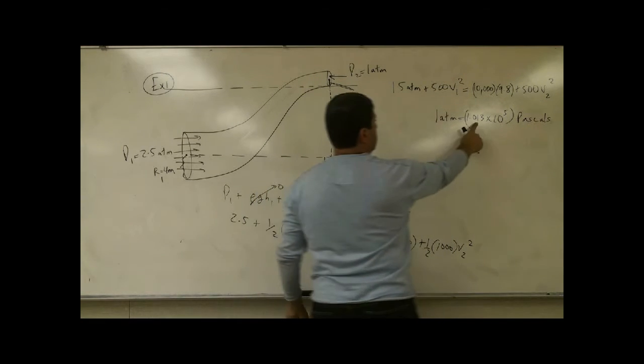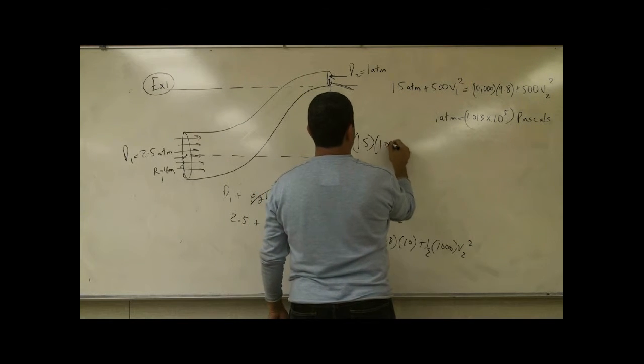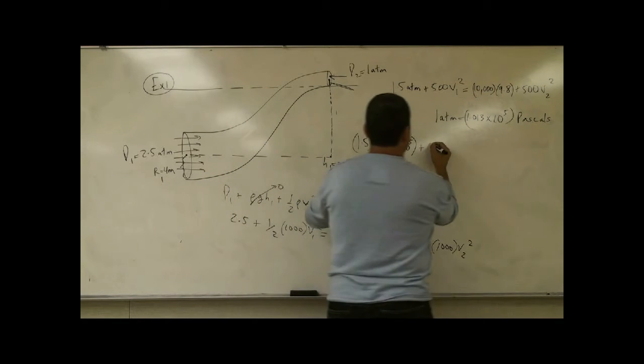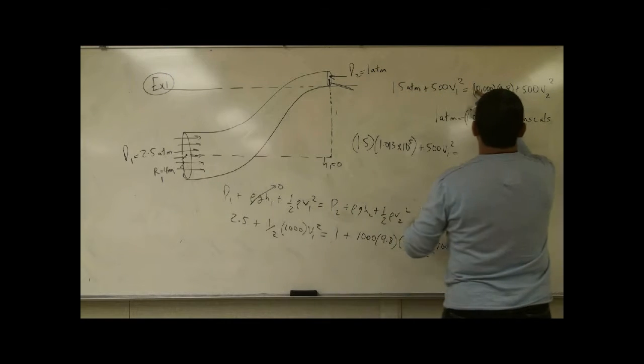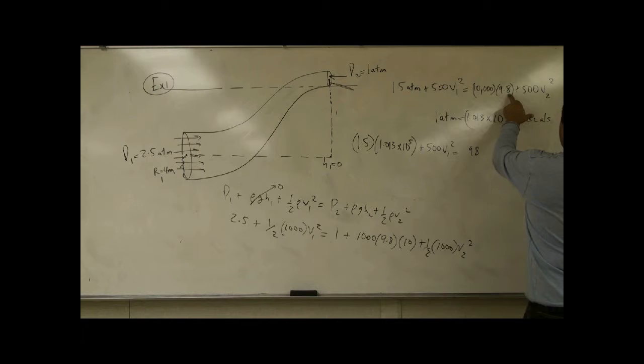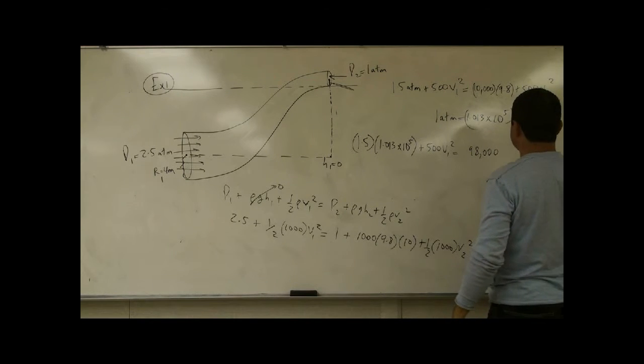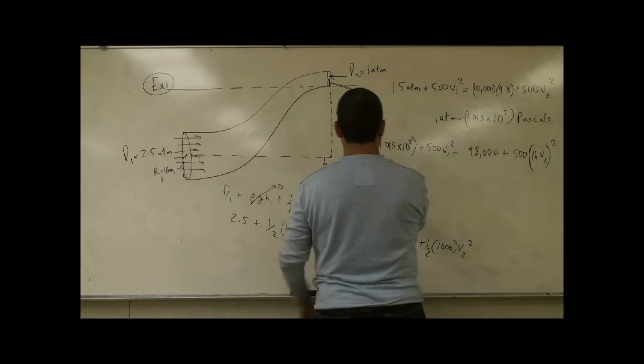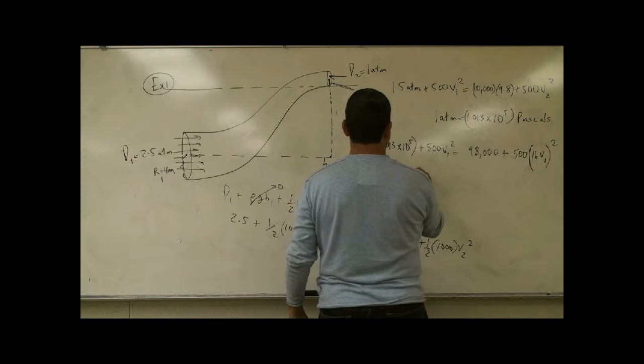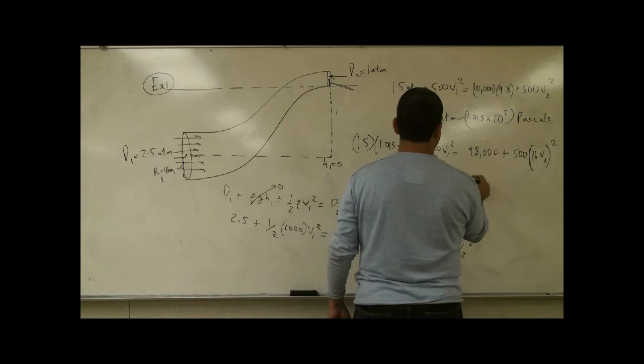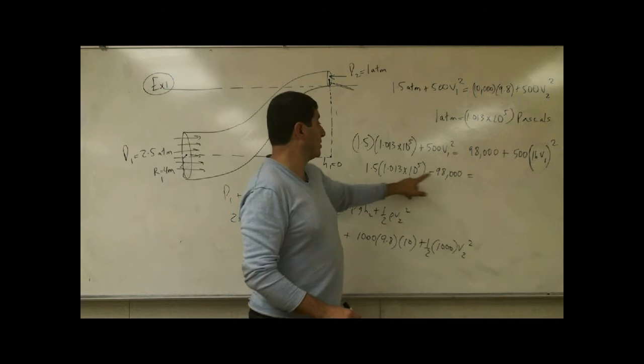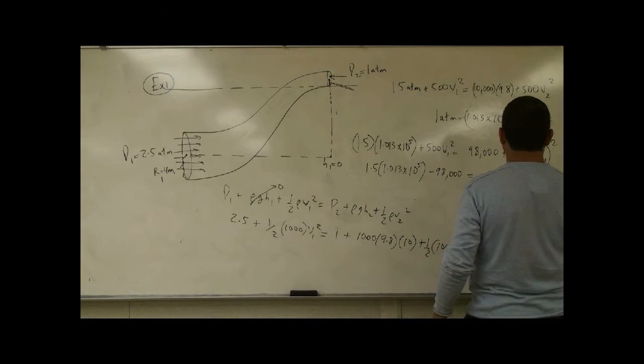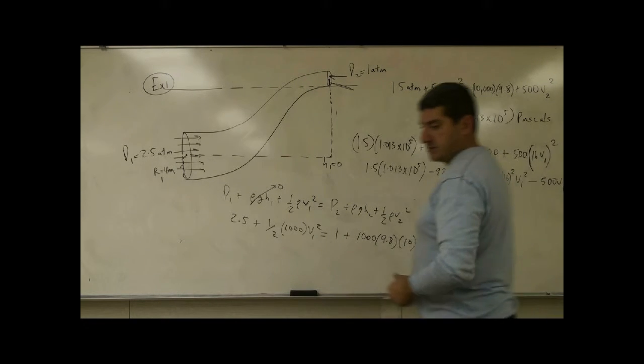So we have here 1 and a half atmospheres and then I have to multiply that by this number, 1.013 times 10 to the fifth plus 500 V1 squared. I'll just keep that as V1. 500 V1 squared. This one, 9.8 times 10 will be 98. 98 and then 1000. Plus we have 500 and then V2 is going to be 16 V1. Take this, bring it over here. 1.5 times 1.013 times 10 to the fifth minus 98,000. This one is going to be a number greater than 100,000. So I can definitely subtract 98,000 from it. And then you have here 500 times 16 squared V1 squared minus 500 V1 squared. So let's do that.